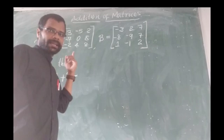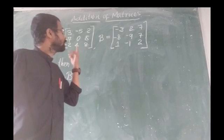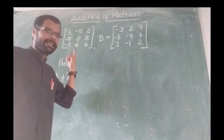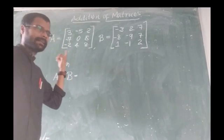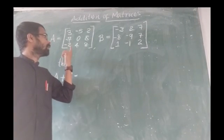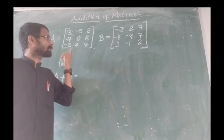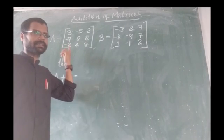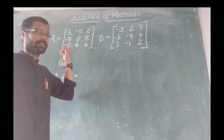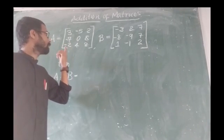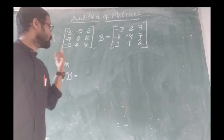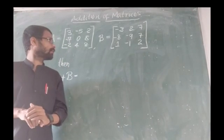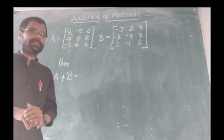Matrix A has the following elements: 3, minus 5, then 2. Then the next row: minus 7, 0, 8. Then the third row: minus 2, 4, 8.